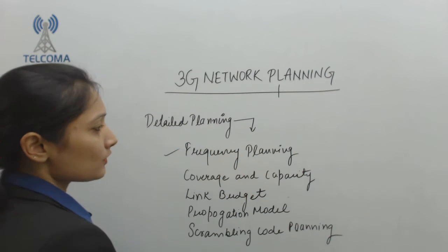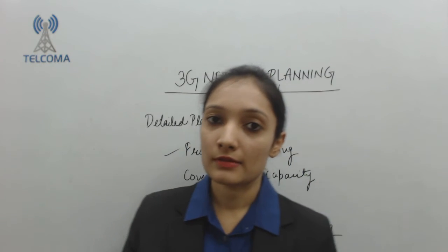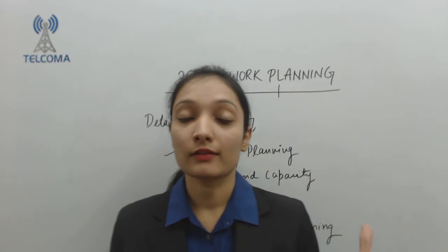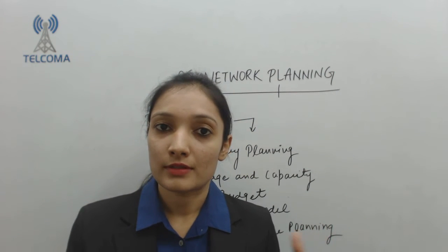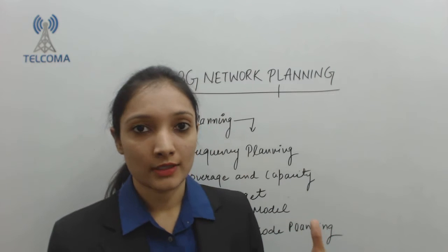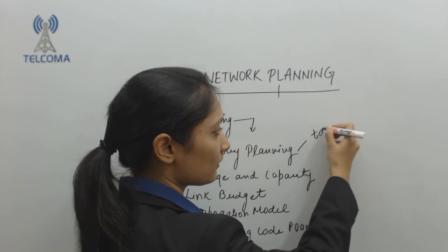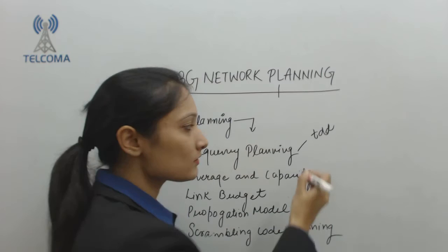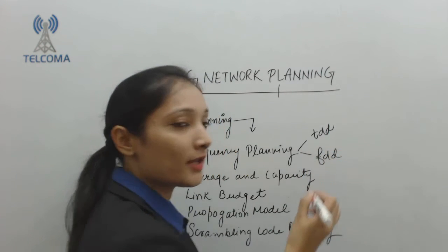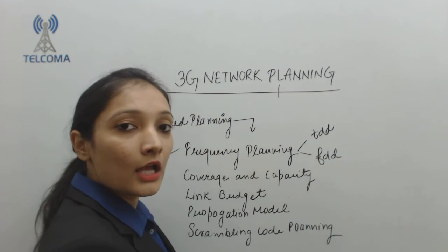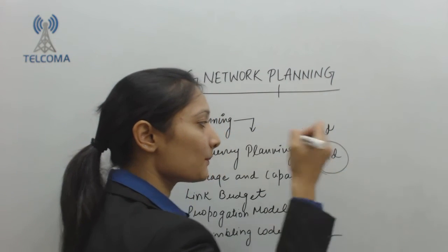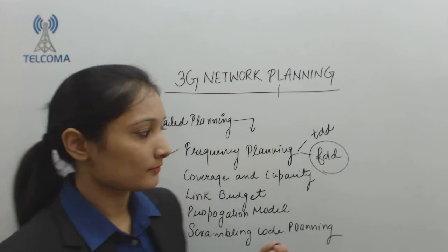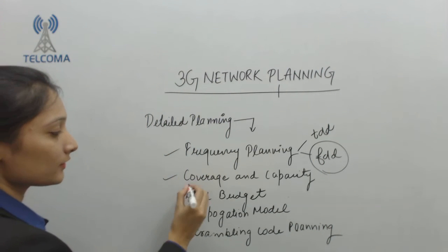Regarding frequency planning: in 3G WCDMA-based systems, all cells share the same frequency. However, frequency is divided among various operators. When dividing the network, we also decide whether it is a TDD-based system or an FDD-based system — that is, frequency division duplexing or time division duplexing. Mostly FDD-based 3G systems are deployed.